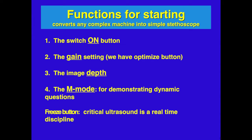The gain setting is important — it controls how bright the image is, which we'll discuss in more detail. Most machines also have a button called Optimize, which will optimize the screen for you. The image depth button is something you will frequently change depending on the structure you're looking at, whether it's a superficial vascular structure or deeper structures like pleural effusions or intra-abdominal organs.